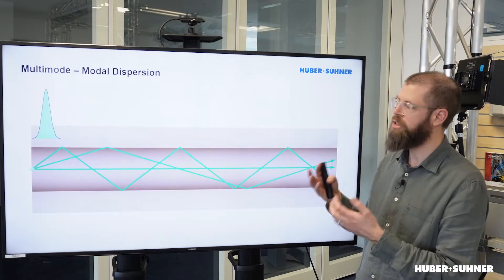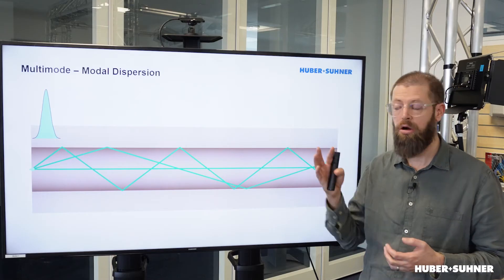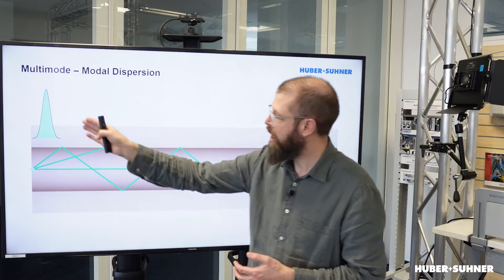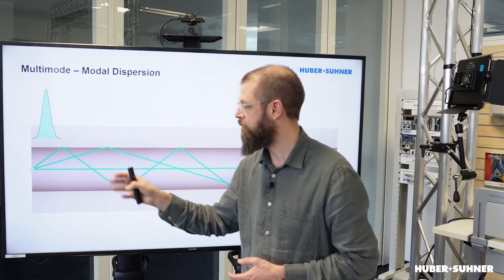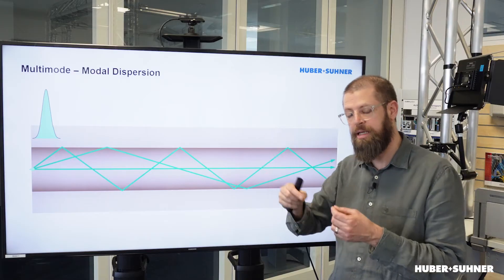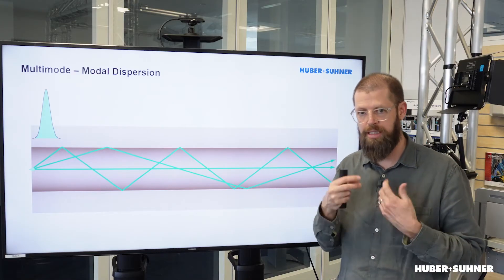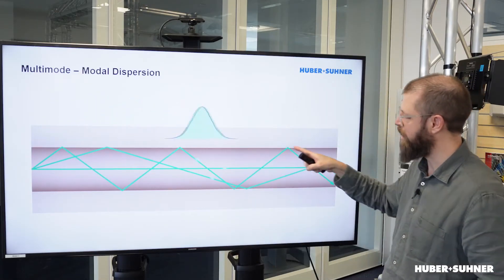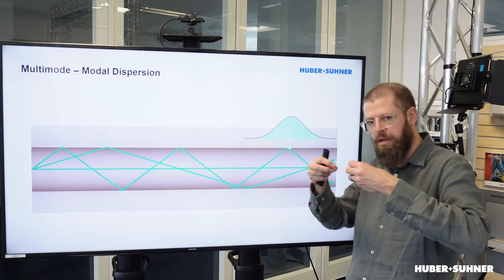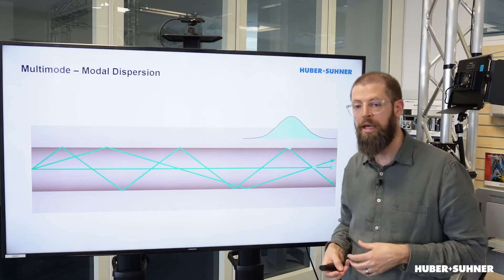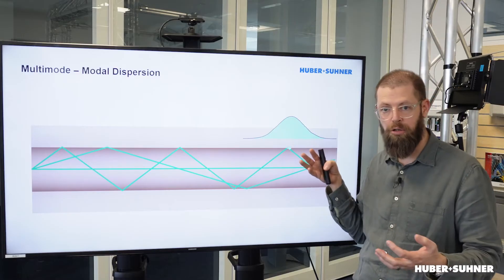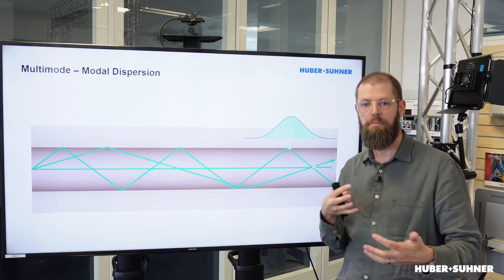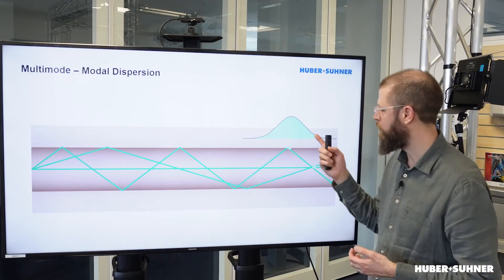The different modes actually come at a cost, and that cost is the so-called modal dispersion. Basically, if we have a light pulse entering the fiber cable, because it is taking different paths, the length of those paths varies. As it travels through the fiber cable, the pulse will start spreading and broadening. If we then have multiple pulses close to each other, they will at some point start bleeding into each other, meaning the receiver won't be able to distinguish between the different pulses.